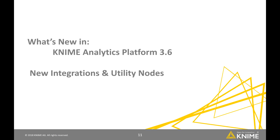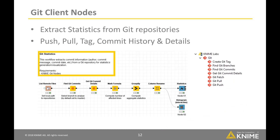Let's talk about the new integrations and utility nodes. Git is a version control system for tracking changes in computer files and coordinating work among multiple people. It is primarily used for source code management in software development, but it can be used to keep track of changes in any set of files. We have added a bunch of utility nodes to extract statistics from Git repositories. The new Git nodes allow you to work with local Git repositories and find commits using different criteria like authors, branches, etc.